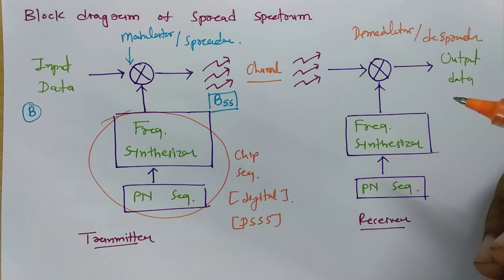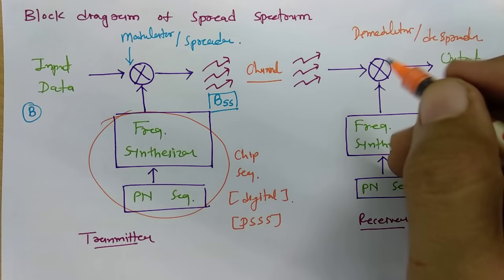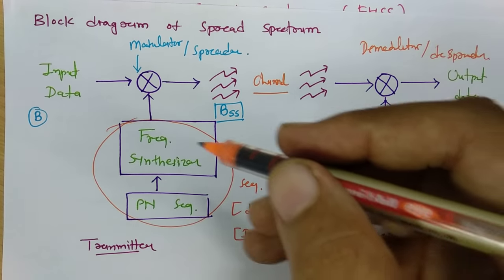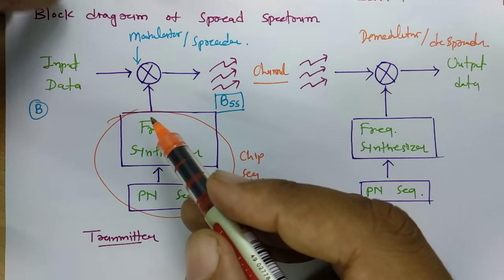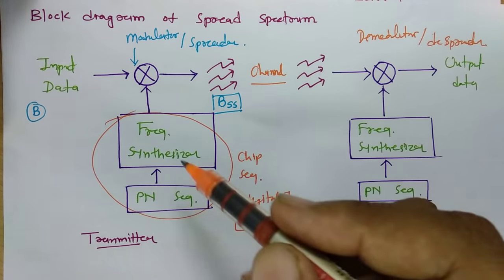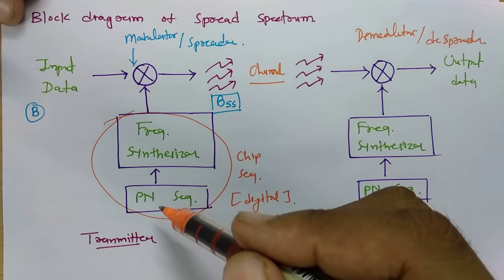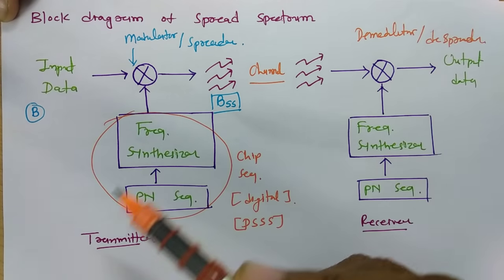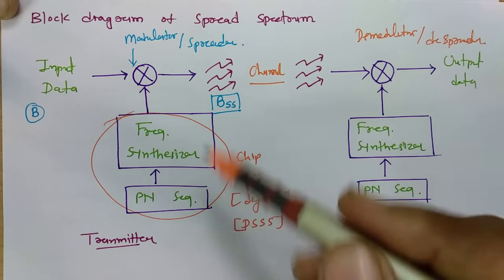The spread spectrum system provides some basic facilities. For example, nobody other than the intended receiver can see what the transmitted signal is, so security is provided. The PN sequence is what secures the information being sent. This is one advantage seen in this basic block diagram.